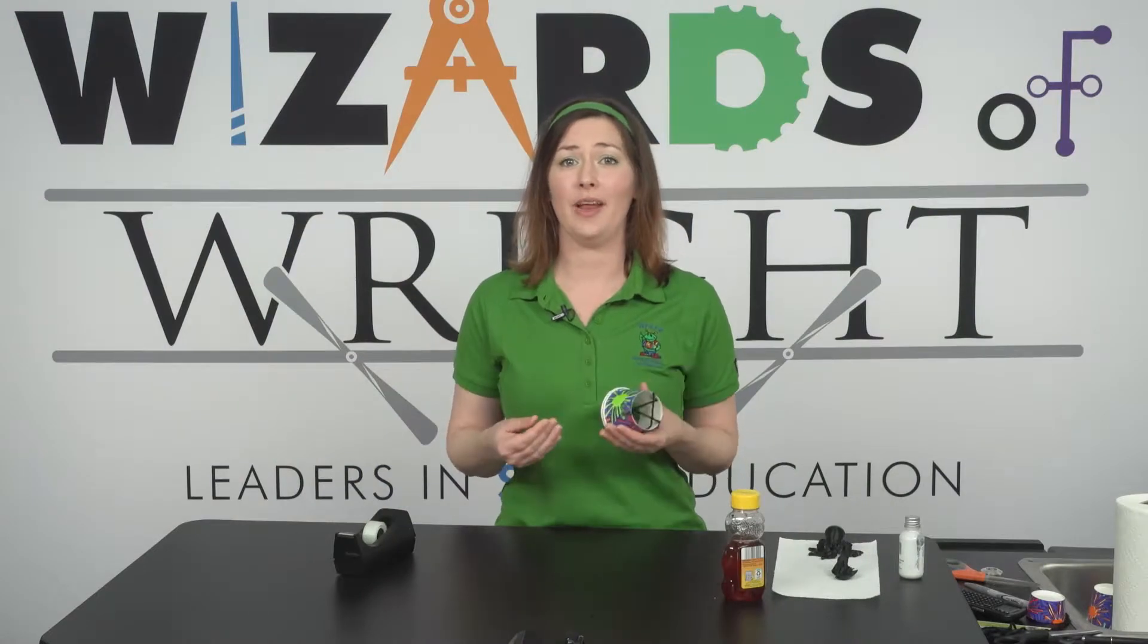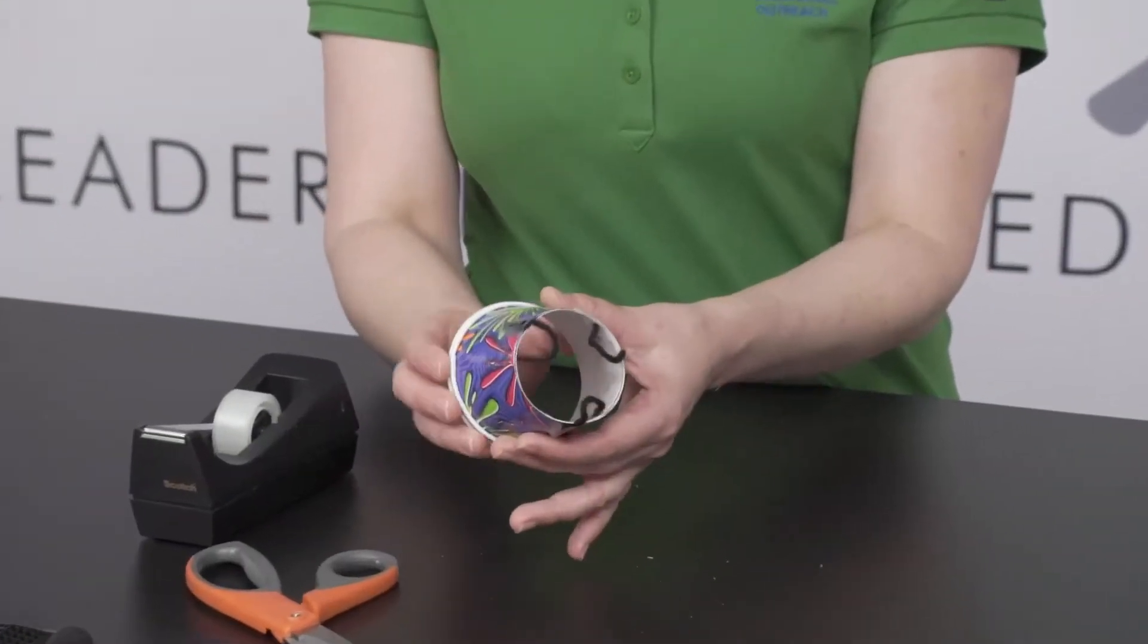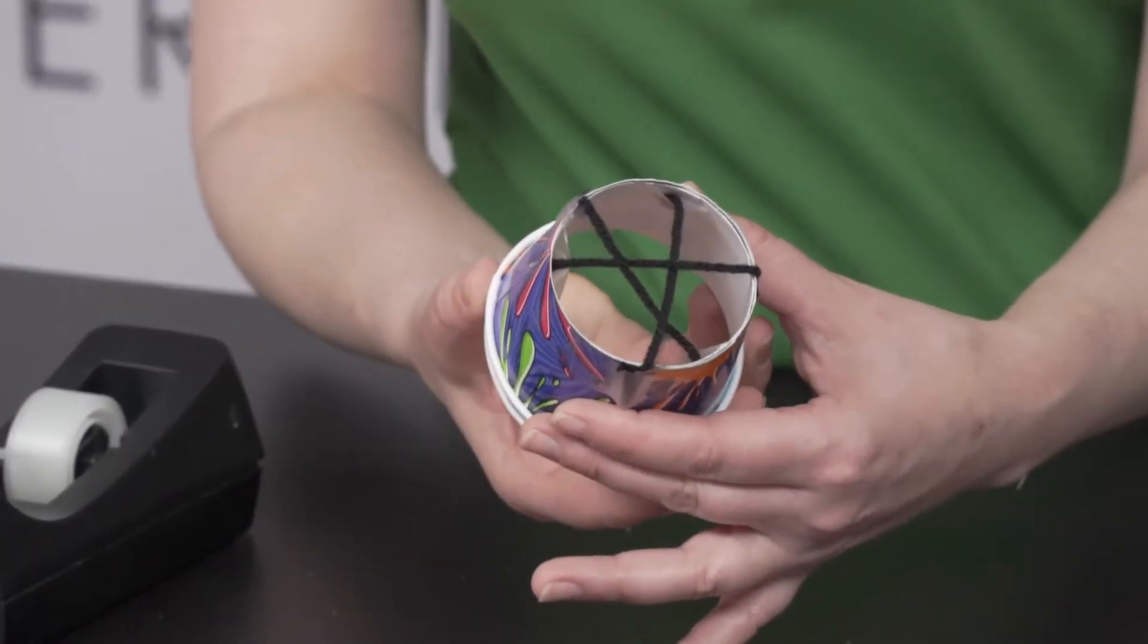Congratulations, you've created your own end effector. You can open and close your robotic hand by twisting the cups like this.